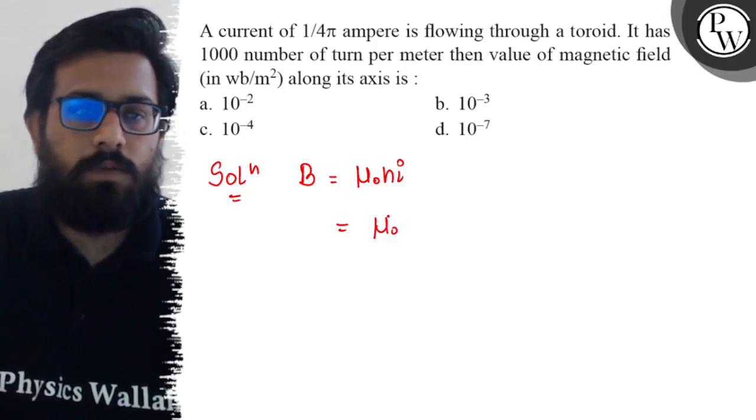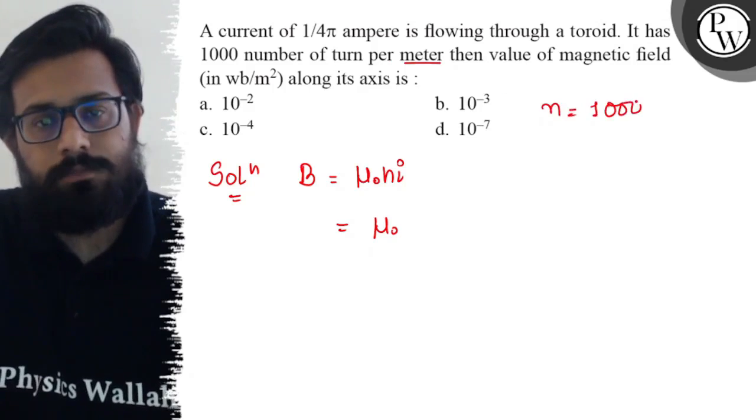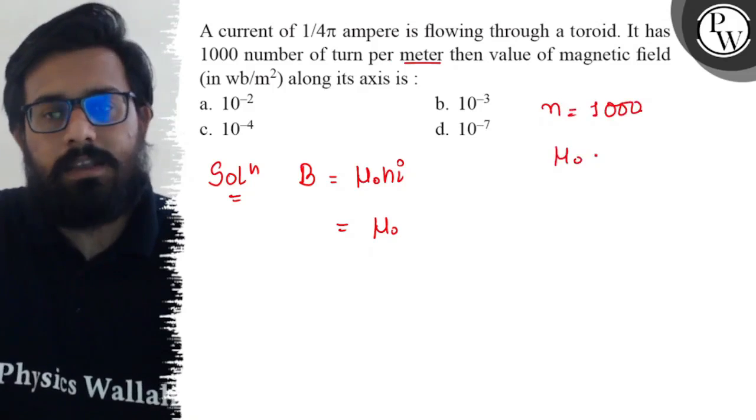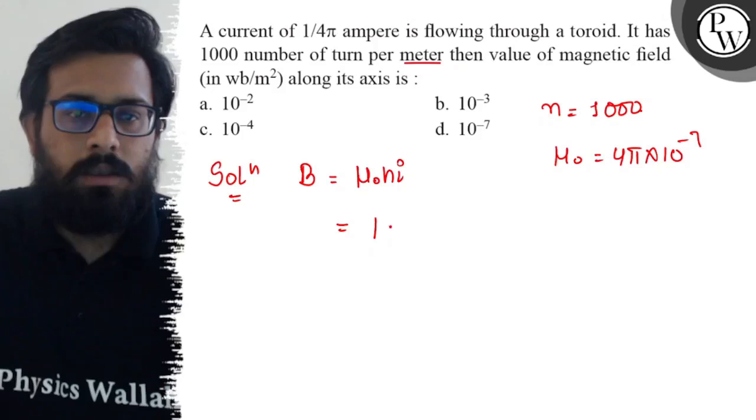We have the value of number of turns per meter, we have the value of small n is 1000. μ₀ can be taken as 4π × 10^-7. So just putting the values...